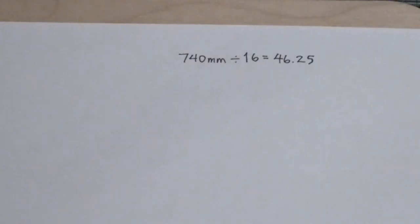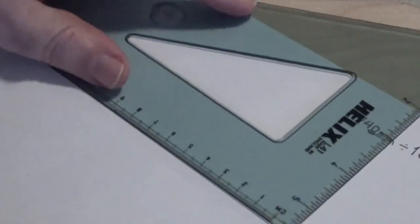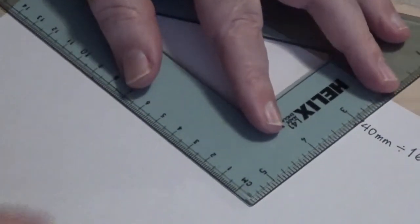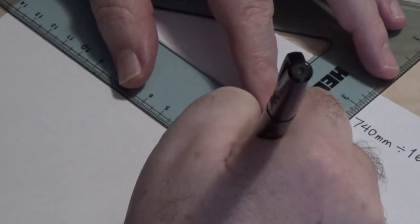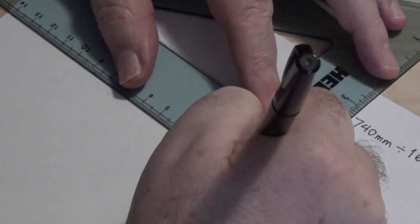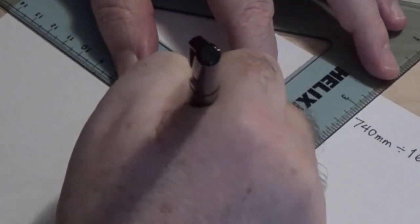Next, divide that number by the number of resistors we're going to use. That gives me a result of about 46 millimeters. If you're using United States customary units, that's about 1 13/16 inches. On your paper, make two marks this far apart. This is the spacing for your resistors.